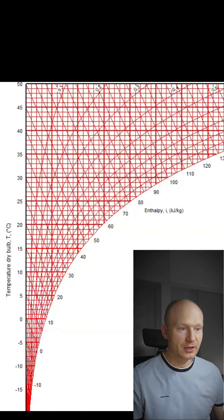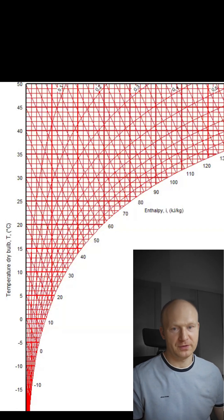The Mollier diagram, also called enthalpy entropy chart, is like a cheat sheet for air properties. Perfect for HVAC calculations.